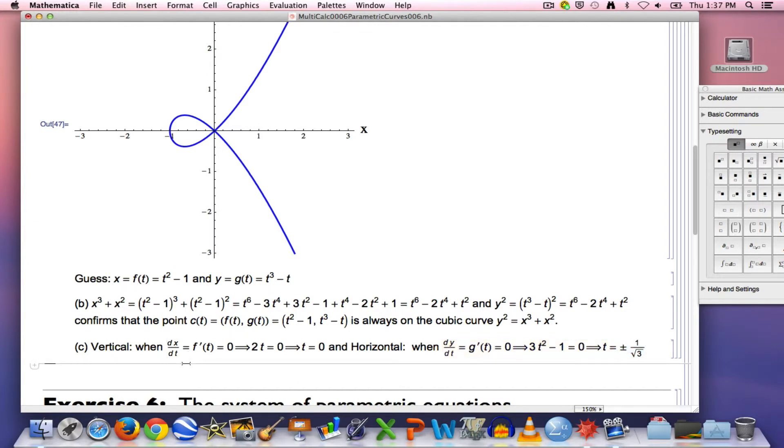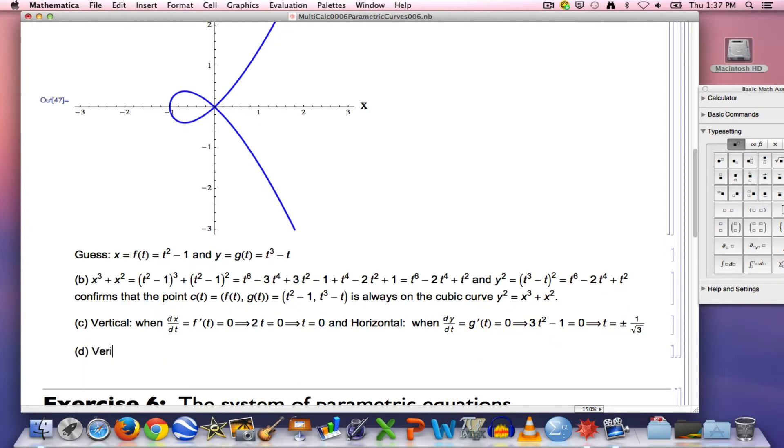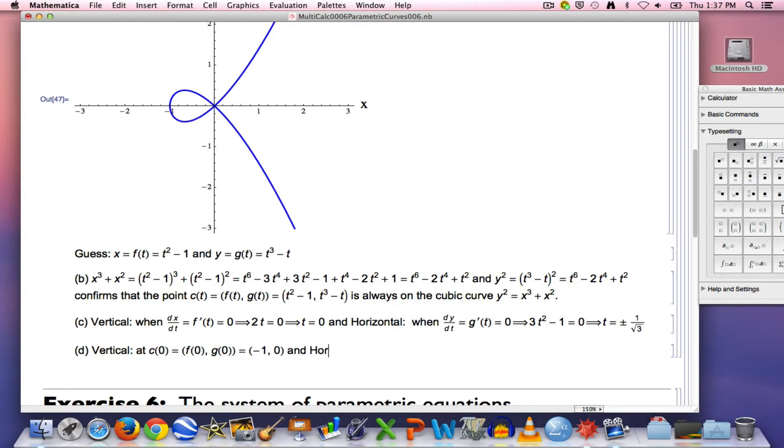What about the x and y coordinates of those points? We're going to have a vertical tangent at the point c of 0, whose coordinates will be f of 0 and g of 0. Plug in 0 into f, get negative 1. Plug in 0 into g, get 0. Just like we predicted at the point negative 1, 0.